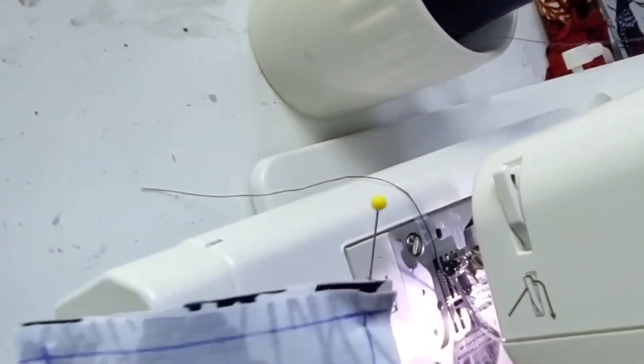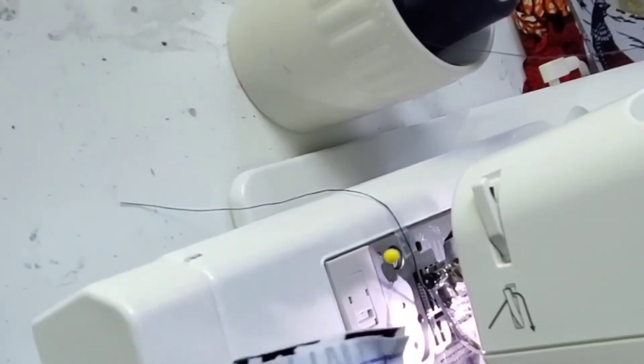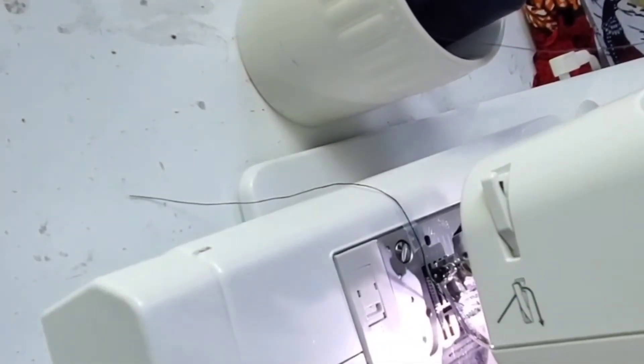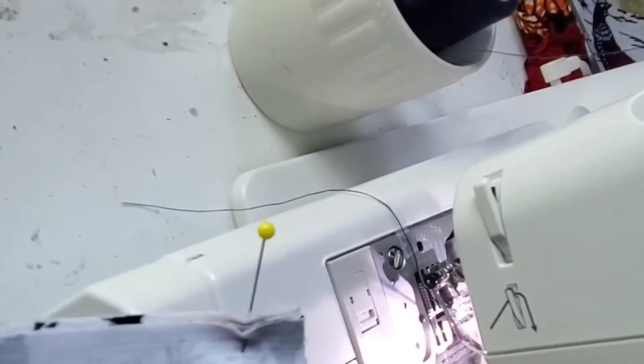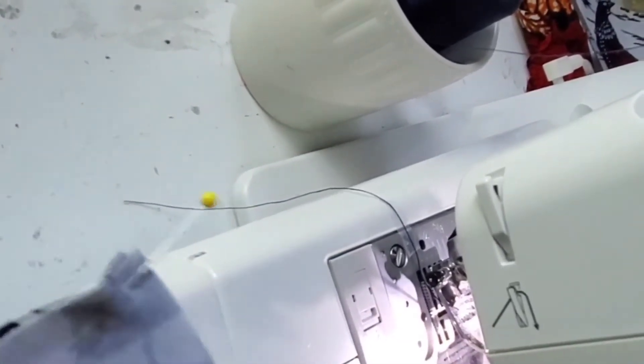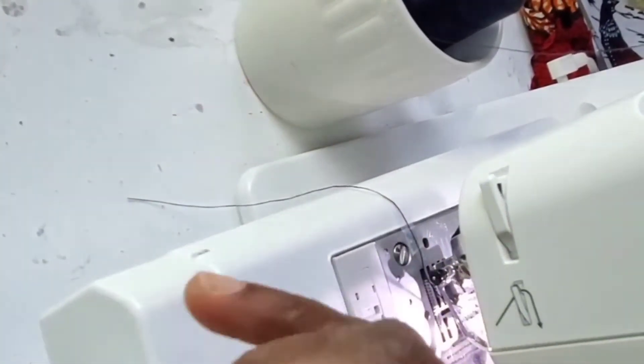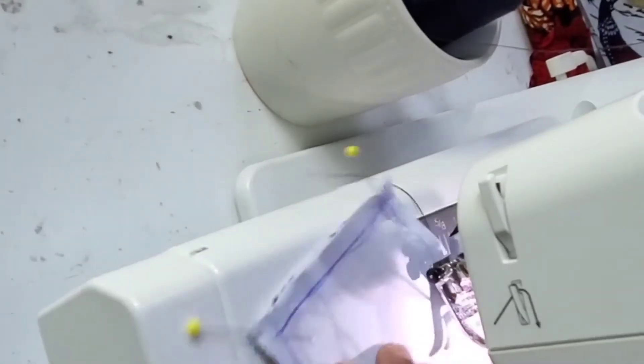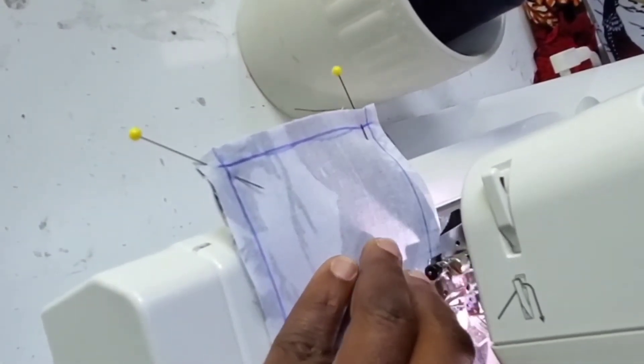What I did was I drew a line a quarter of an inch so that's what you see with the pen. I just stitched a quarter of an inch but I made sure that I left an inch and a half or two inches for me to turn it inside out.